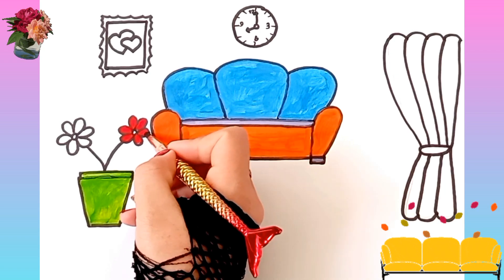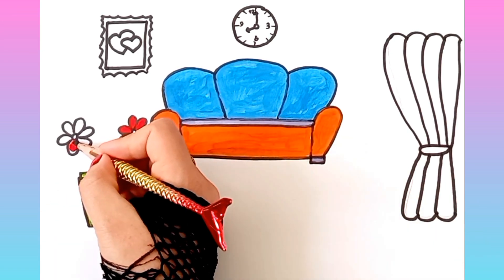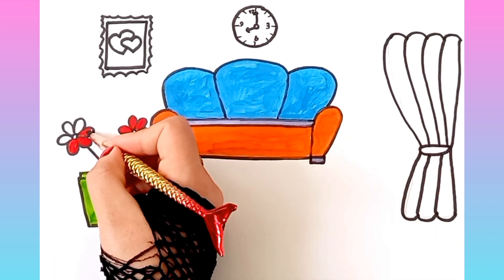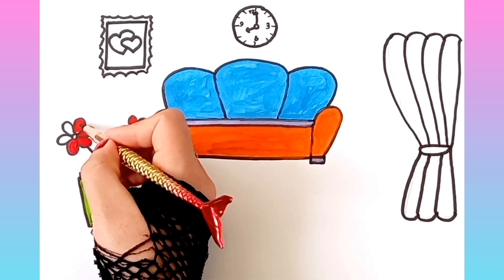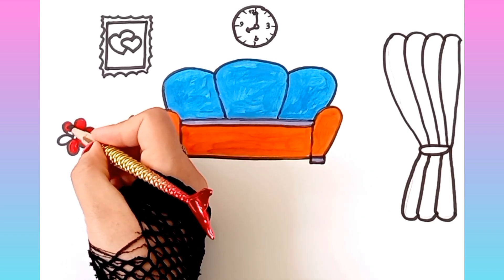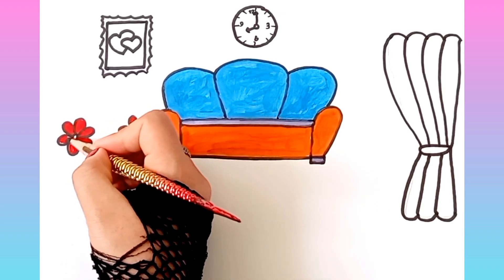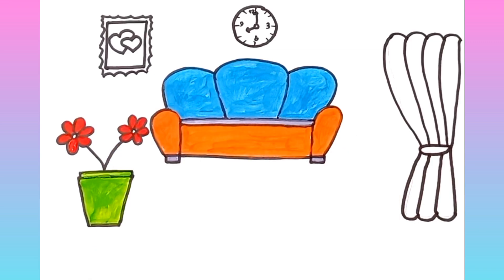J is for jump, j, j, jump. K is for kangaroo, k, k, kangaroo. L is for lion, l, l, lion.